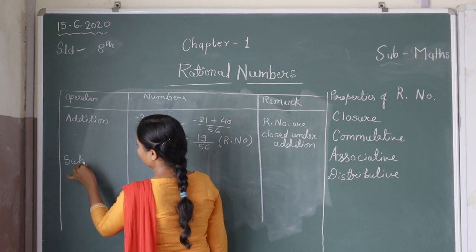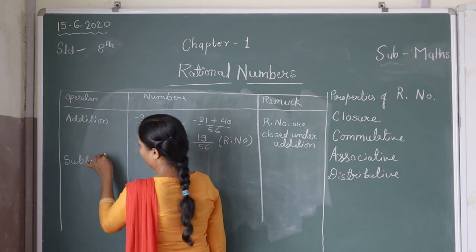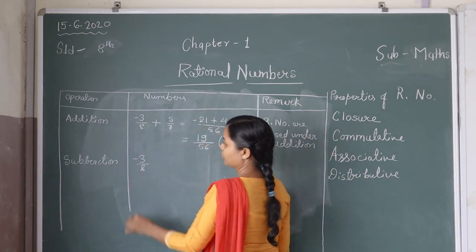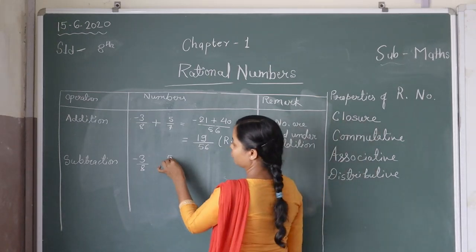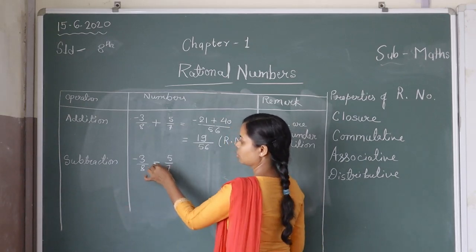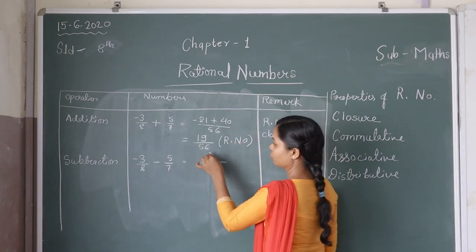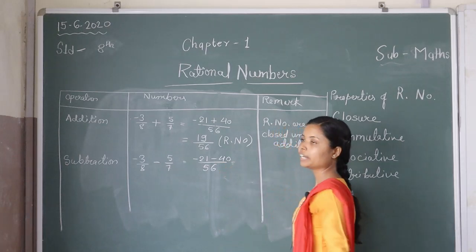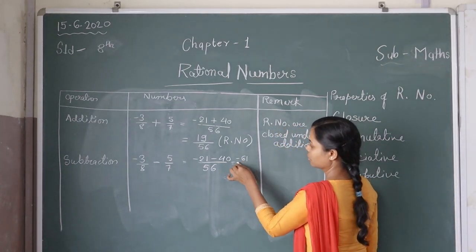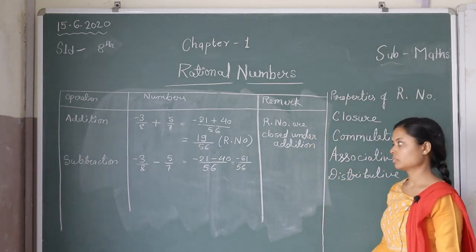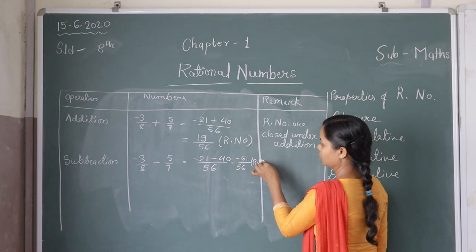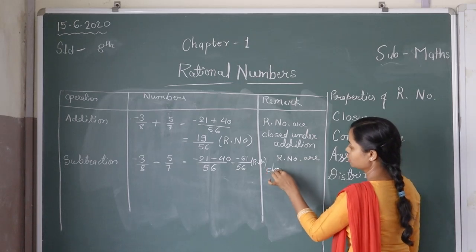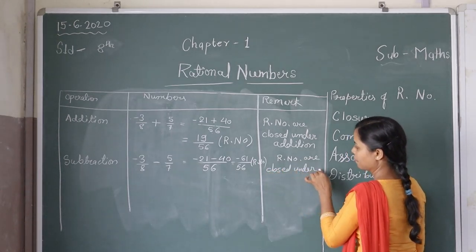We move to the next operation: subtraction. Taking the same rational numbers, minus three by eight and five by seven, and when we subtract these, we find the LCM then cross multiply. We get minus 61 by 56. It is a rational number. So we can say that rational numbers are closed under subtraction.